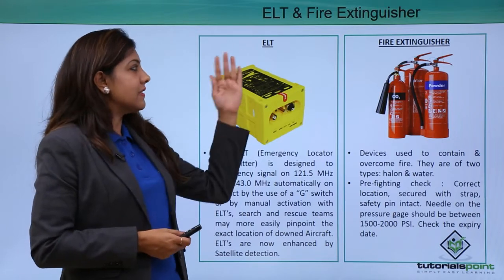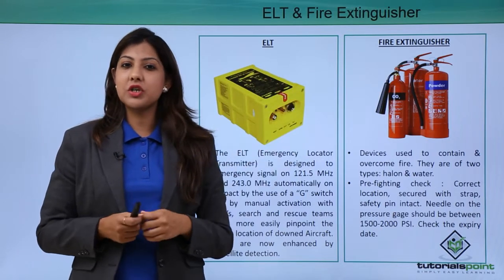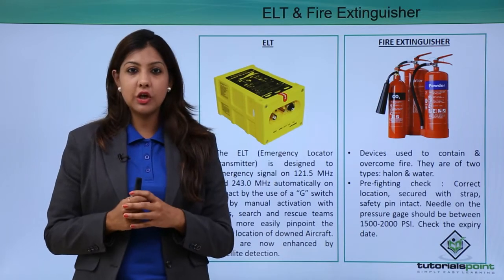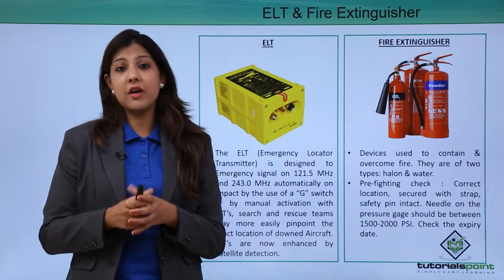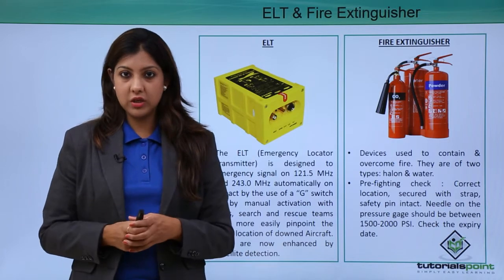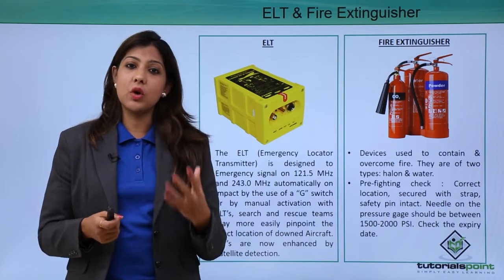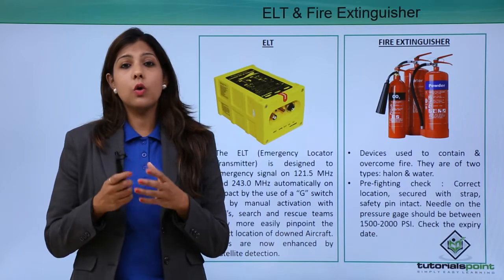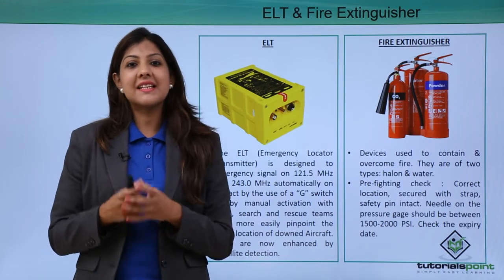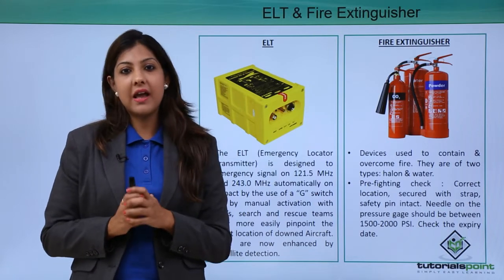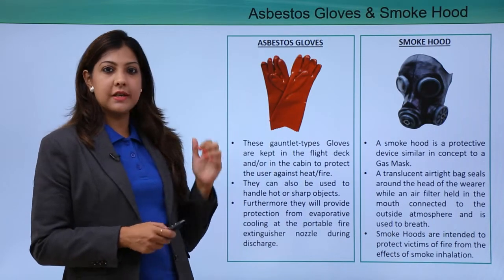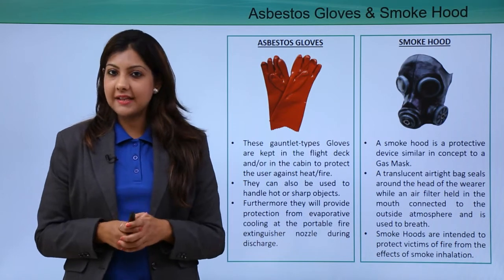The fire extinguisher is a very important safety equipment. There are fire extinguishers under each crew jump seat. A fire extinguisher is there to deal with fire that may break out on board the aircraft — in the galley, in the toilet or lavatory area — and helps to extinguish fire quickly.